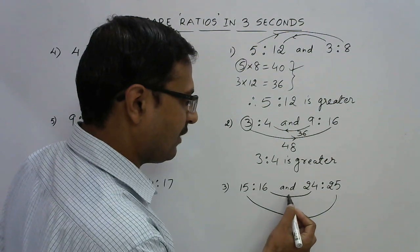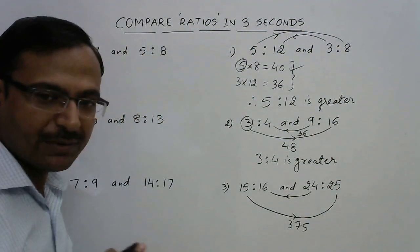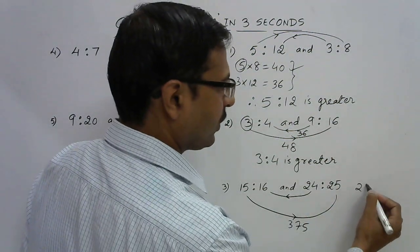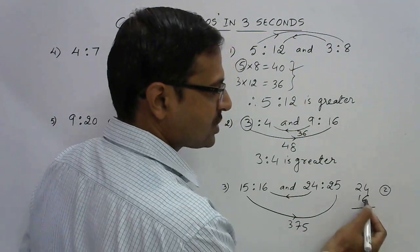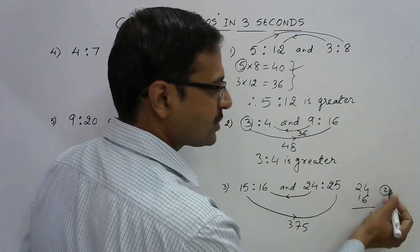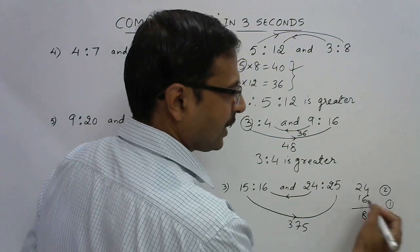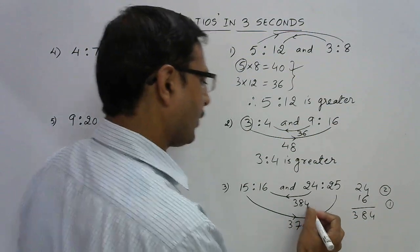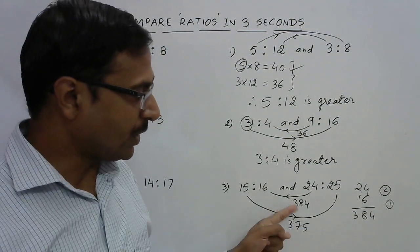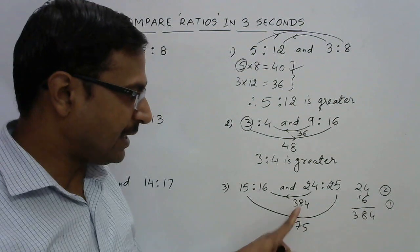What about the product of 16 and 24? Now you need to make use of the basic method, so 24 and 16: 64, 24, 4, 2 carry, this is 12 and 4, 16 plus 2, 1, 8, 1 carry, and now we have 2 plus 1, 3. So this is 384.